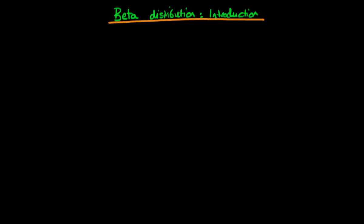In this video, I want to provide an introduction to the beta distribution. What we're going to do is talk about, first of all, defining what is meant by the beta distribution. Then, importantly, we're going to talk about why we might want to use the beta distribution as a way of specifying prior knowledge about a situation, and in what circumstances we would want to do that.